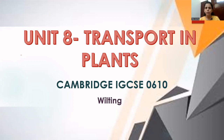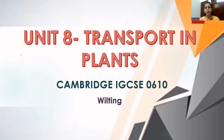We know that in the process of transpiration, plants lose excess water from leaves through stomata. This water is lost in the form of water vapors, which diffuse outside the leaf through stomata. We also discussed transpiration pull and transpiration stream in previous videos.